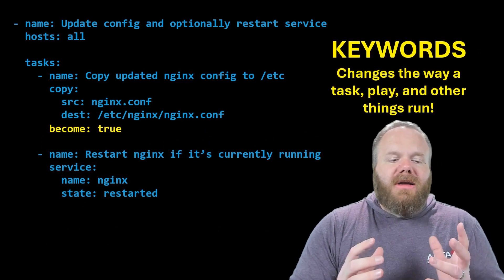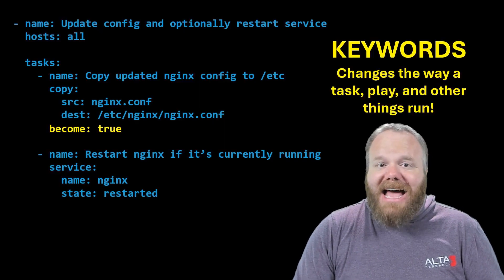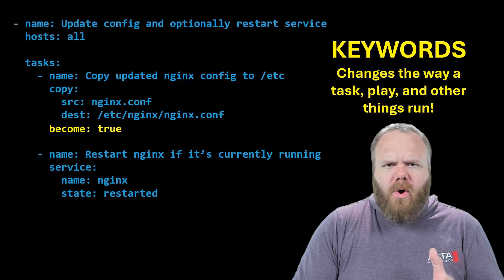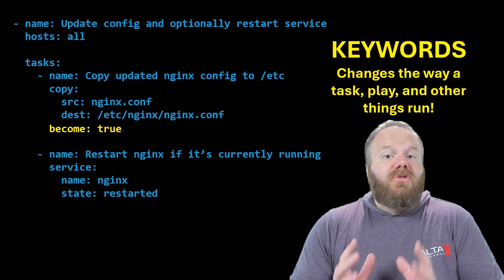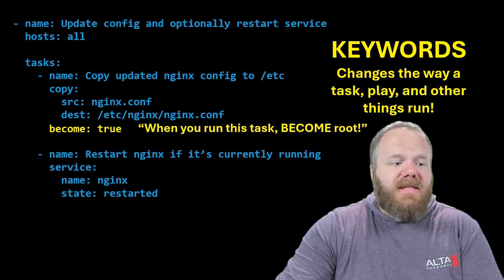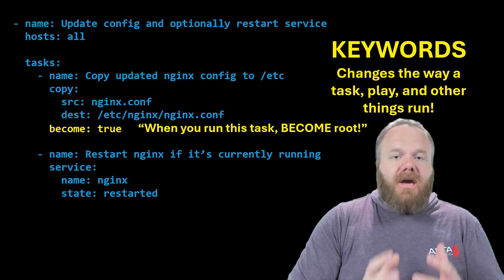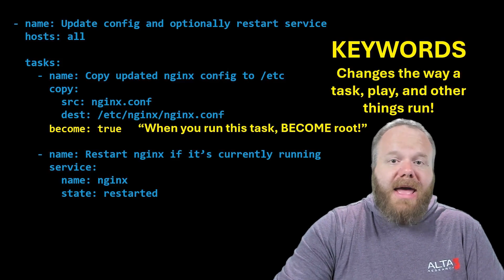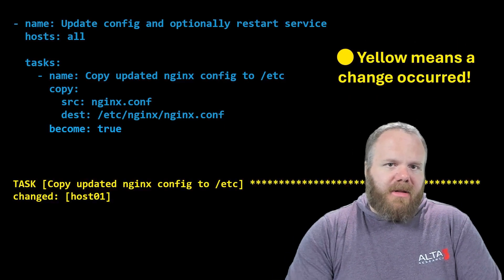Keywords are key-value pairs that change the way that a task, play, or other types of objects like blocks and roles work. For instance, become: true means that when you run this task, become root. So if we added that keyword and ran this playbook again, this is what we would probably get — a yellow output that says changed.